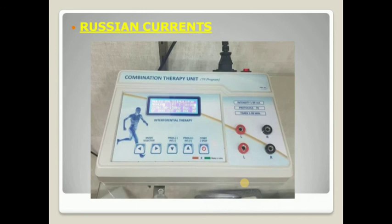And the last is Russian current. It is an AC current with a frequency of 2.5 kilohertz. It is mostly used for muscle mass and edema reduction, and to stimulate motor nerves. Due to the high frequency, it allows deep muscle penetration, stimulation, and muscle fiber contraction. As you can see in this image, most of the Russian current units are combined with the IFT unit or other combination units.